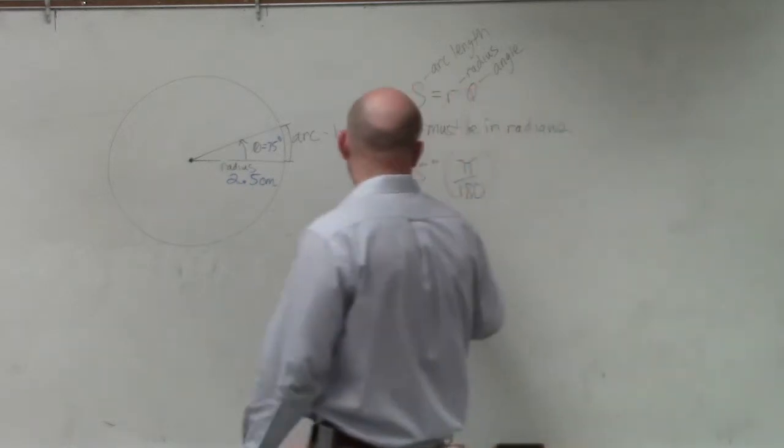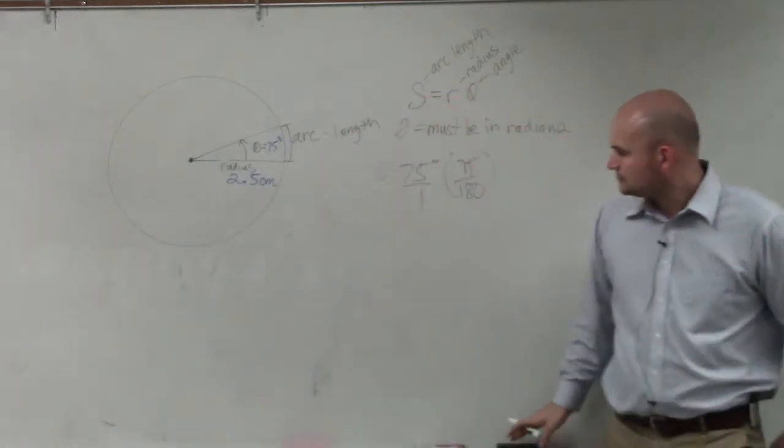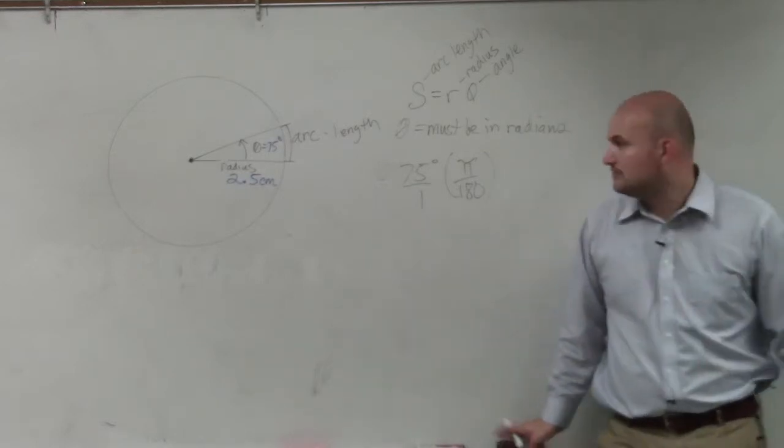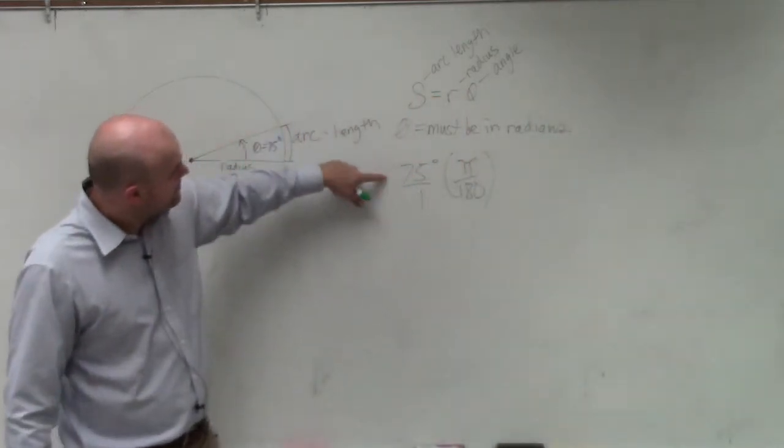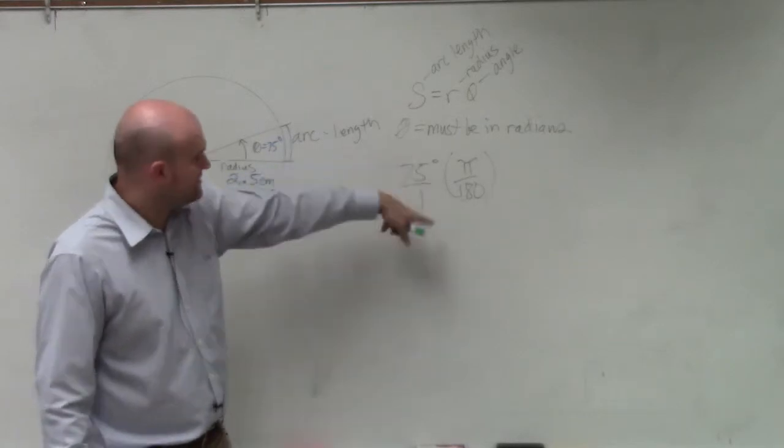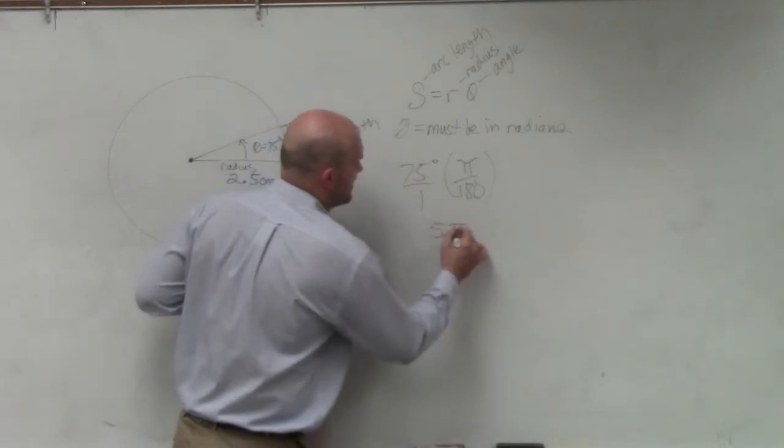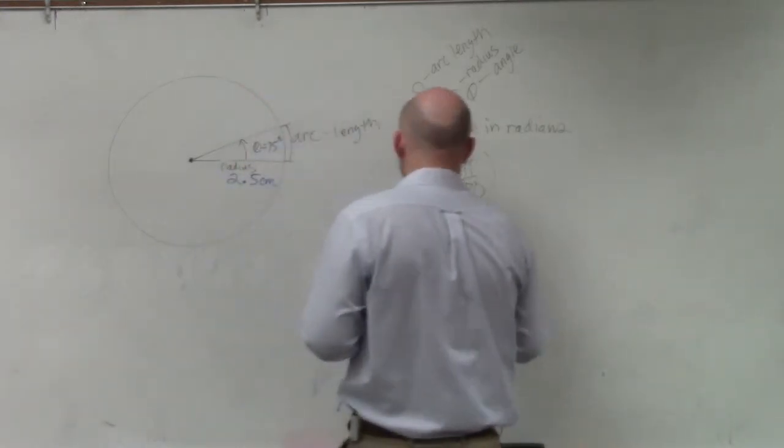And so therefore, 75 pi over 180. OK, so you go ahead and simplify that. You'll notice that 15 goes into both the top and bottom. So that reduces to 5 pi over 12. So that is my new theta.